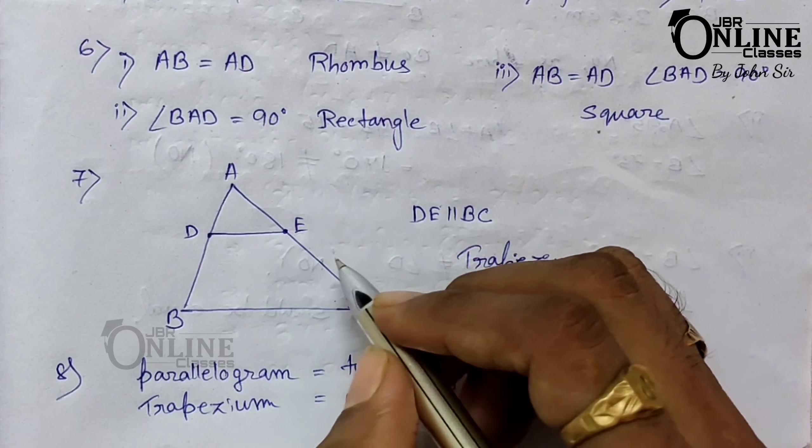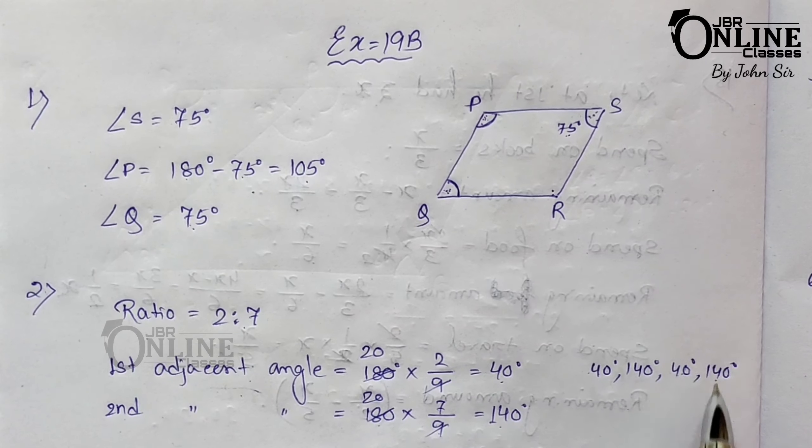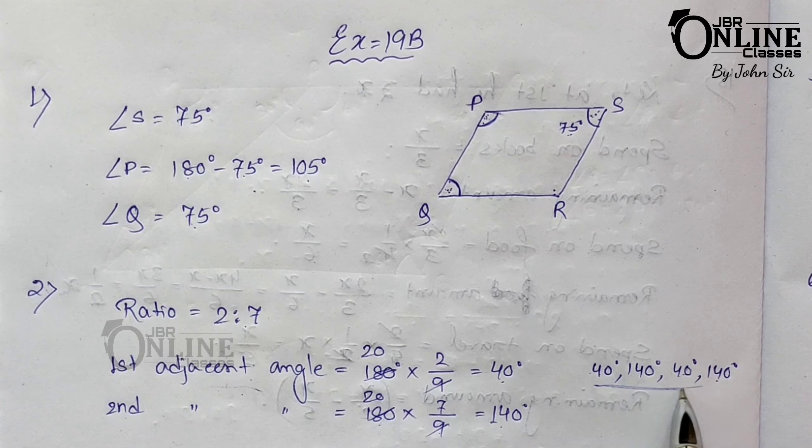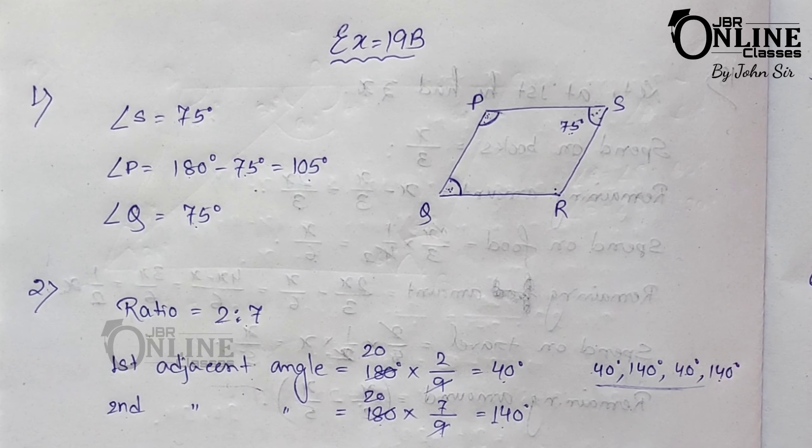Number two: the measures of two adjacent angles of a parallelogram are in the ratio 2:7. Since the sum of two adjacent angles equals 180 degrees, the first angle equals 180 × 2/9 = 40 degrees, and the second equals 180 × 7/9 = 140 degrees. Since opposite angles are equal, there are two 40-degree angles and two 140-degree angles.